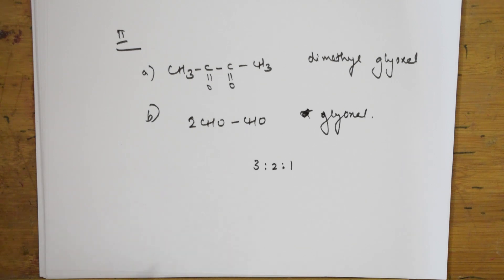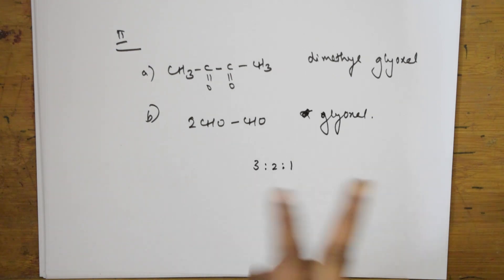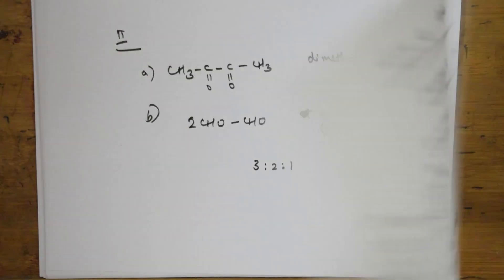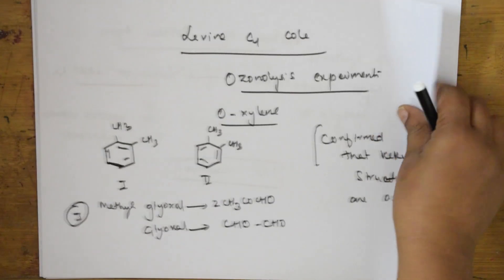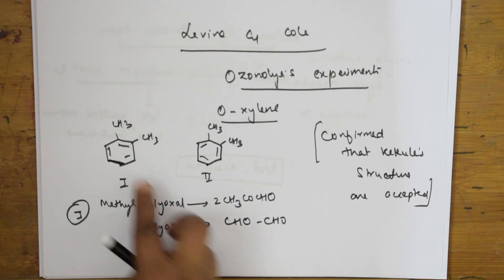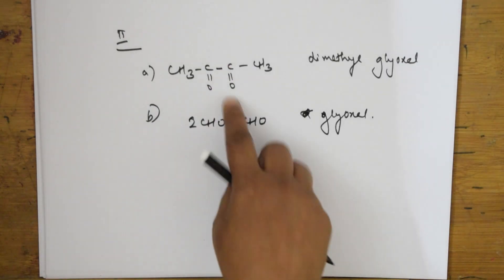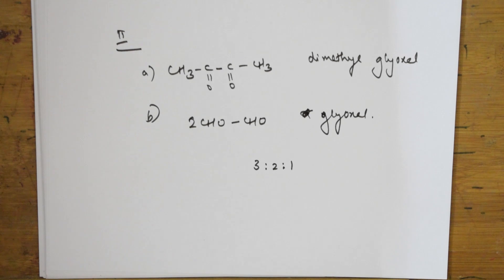Hope you understood, students. Orthoxylene exists in both Kekulé structures. After shifting the pi bonds, the first structure gives two products and the second one also gives two products. Because of this, it is proved that both Kekulé structures are acceptable. Thank you for watching, students.